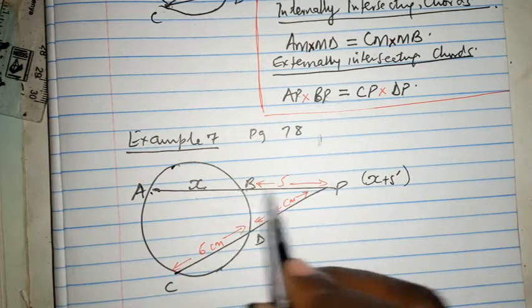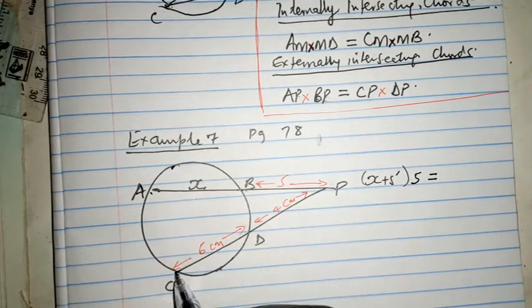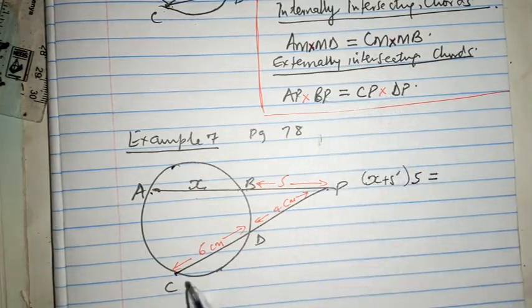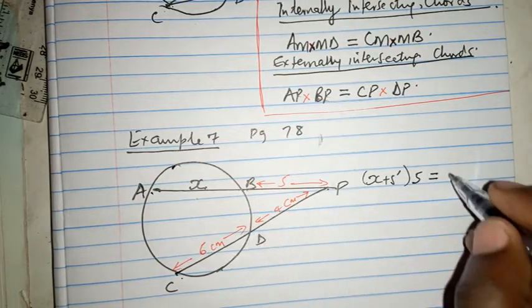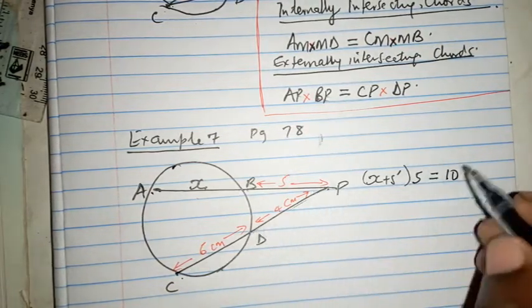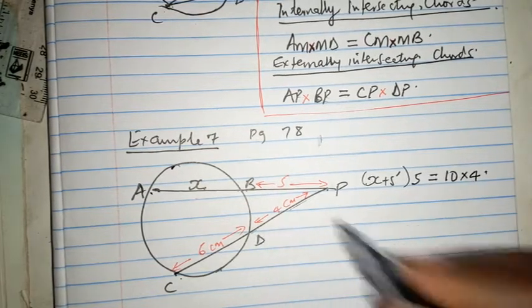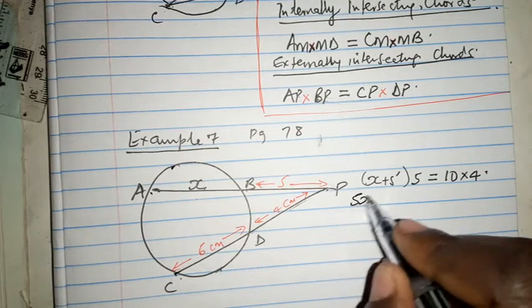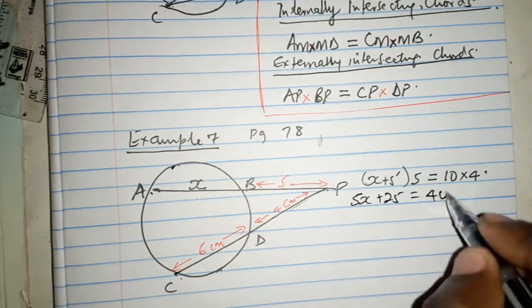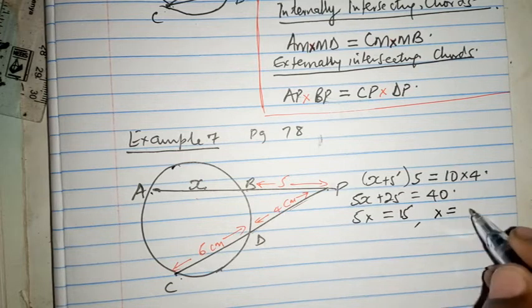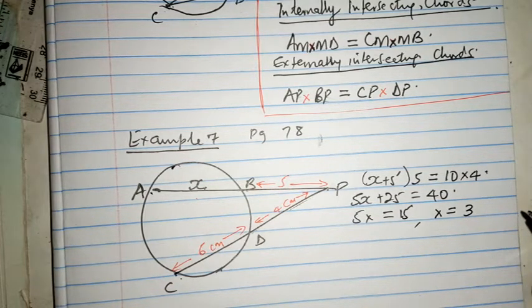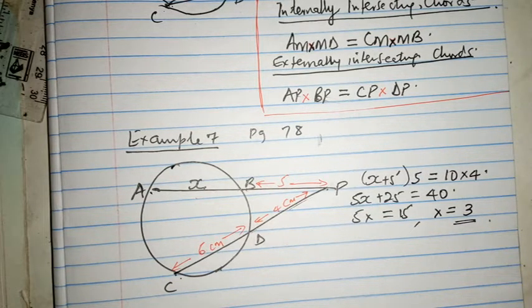Equals CP which is six plus four, which is ten, times the external part which is four. This is just opening the bracket: 5X plus 25 equals 40, and 5X is going to be 40 minus 25 which is 15, and X is going to be 3 centimeters.